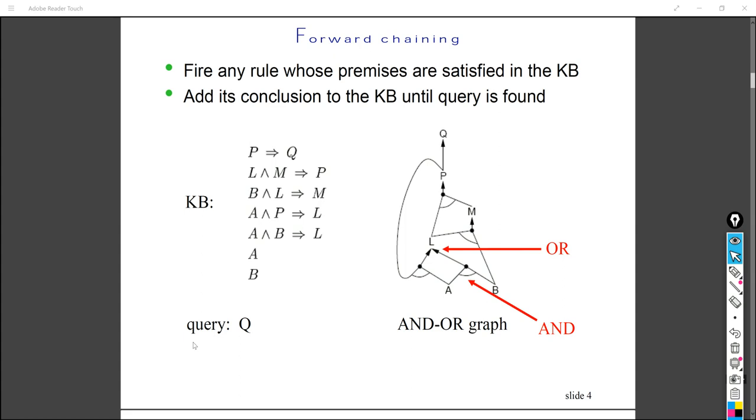So the difference between forward and backward chaining is for forward chaining, we actually come from our knowledge base and derive our target. As for backward chaining, we start from our target and work backwards to find out whether the conditions are satisfied or not in order to make our question true.